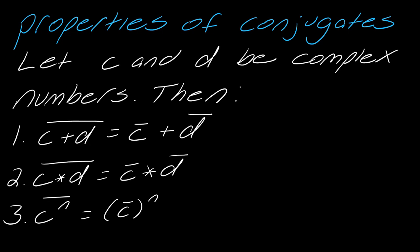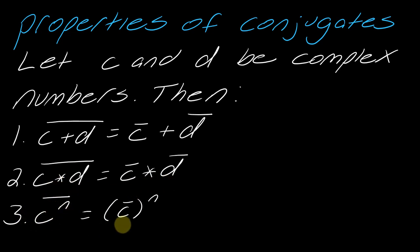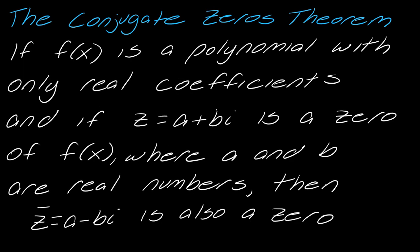There are a couple of properties of conjugates that help prove why the conjugate zeros theorem works. First, (c + d)-bar equals c-bar plus d-bar. Second, (c times d)-bar equals c-bar times d-bar. Third, (c to the n)-bar equals c-bar to the n.